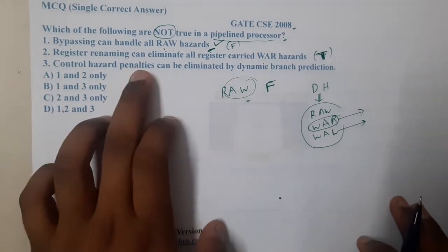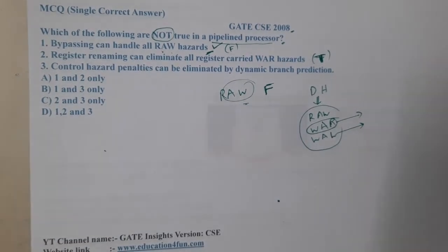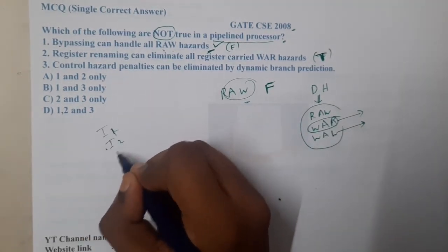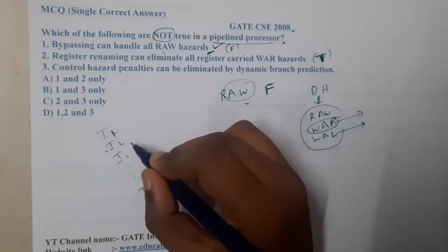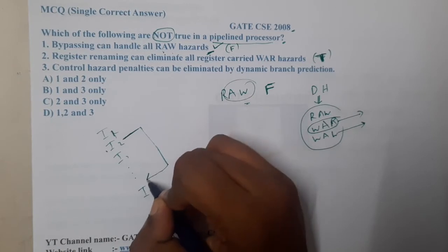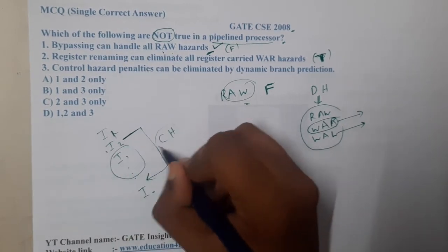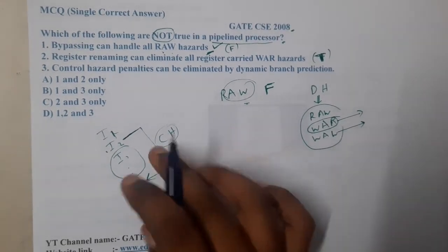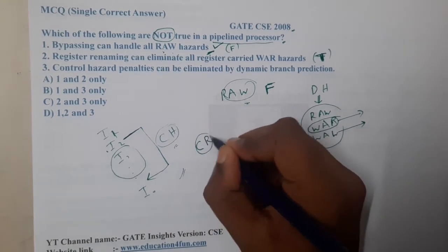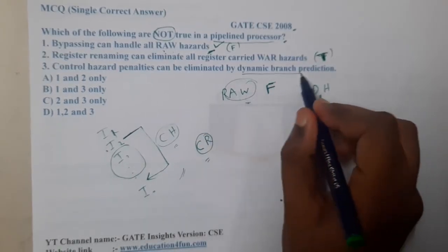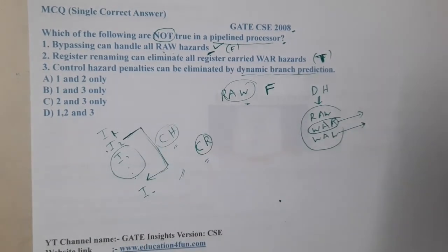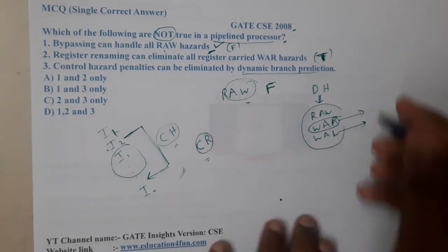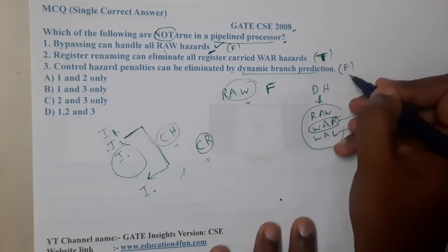Option D says control hazard penalties can be eliminated by dynamic branch prediction. A control hazard occurs when there is a conditional branch — for example, an 'if' condition causing a jump to another instruction. The only real solution is code rearrangement. Branch prediction cannot guarantee the correct answer every time, so control hazard penalties cannot be fully eliminated by dynamic branch prediction. This makes option D false.